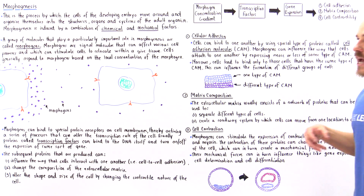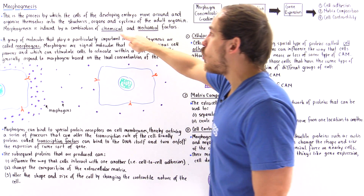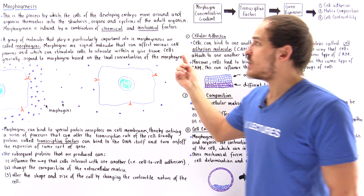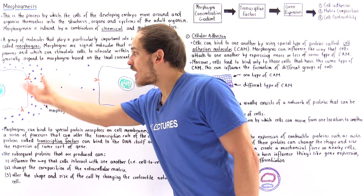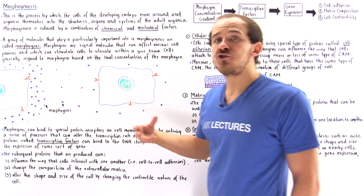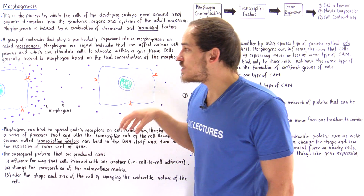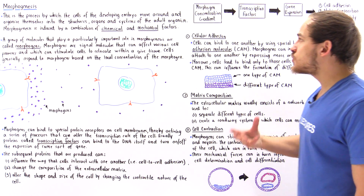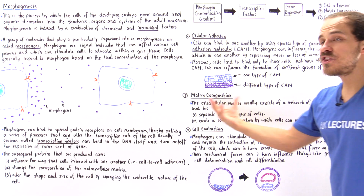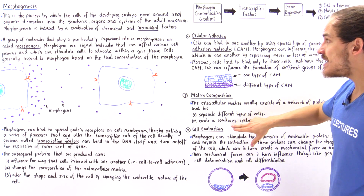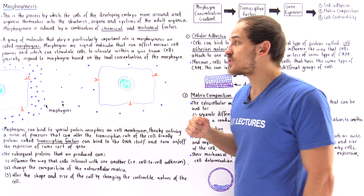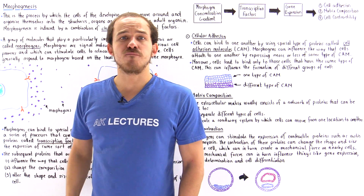Morphogenesis is stimulated by not only chemical factors but also mechanical factors. When morphogens influence the processes inside the cell, the process stimulated is typically gene expression. By producing proteins inside the cell, these proteins can either change the cell-to-cell adhesion properties, the composition of the extracellular matrix, or the ability of that cell to contract — and as a result form those mechanical forces that also influence the process of morphogenesis.